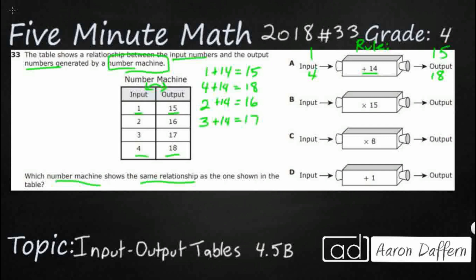A is definitely looking good, but let's see why B, C, or D don't work. Starting with input 1 and output 15: 1 times 15 equals 15 — so that does work for the first pair. But let's try input 4: 4 times 15 should make 18. That's where it breaks down — 4 times 15 equals 60, not 18. So the times 15 rule only works for the first pair; it doesn't work for inputs 2, 3, or 4.